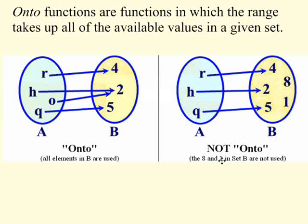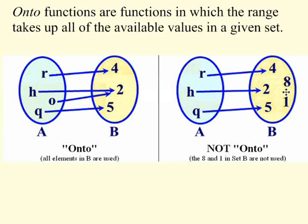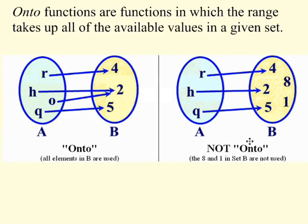Look at our second example to the right. The available values in the set are 4, 2, 5, 8, and 1. However, the range only takes up 4, 2, and 5. The values 8 and 1 are not used. Therefore, this is not onto.